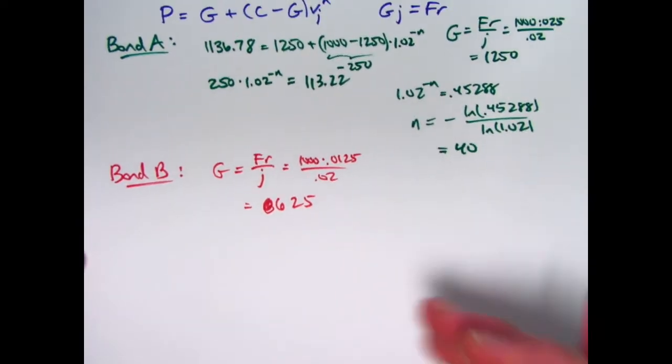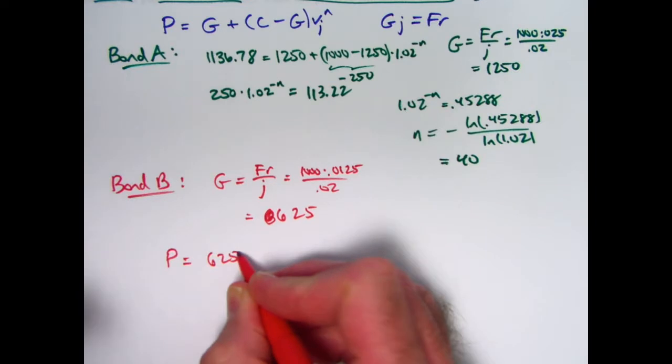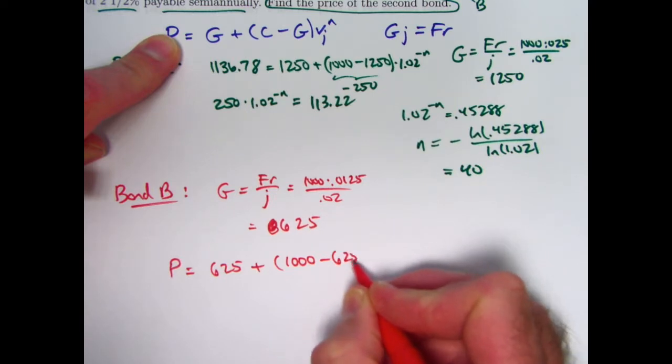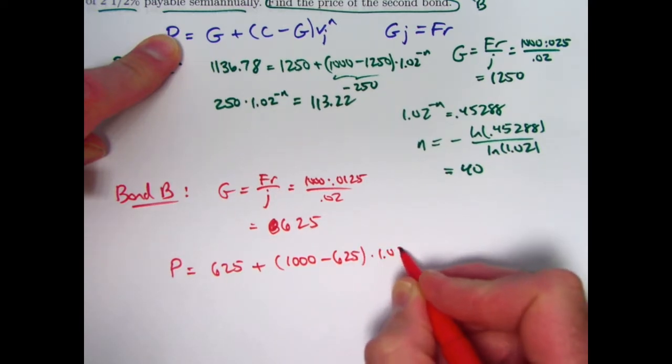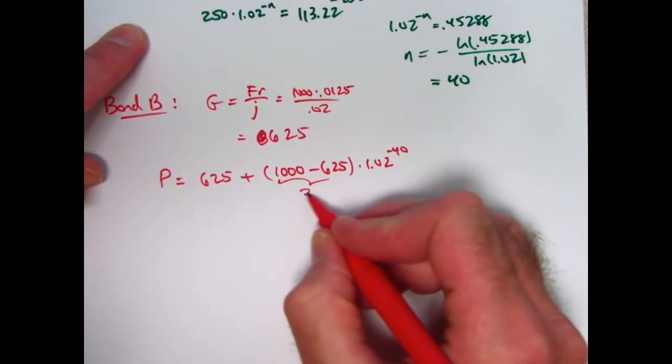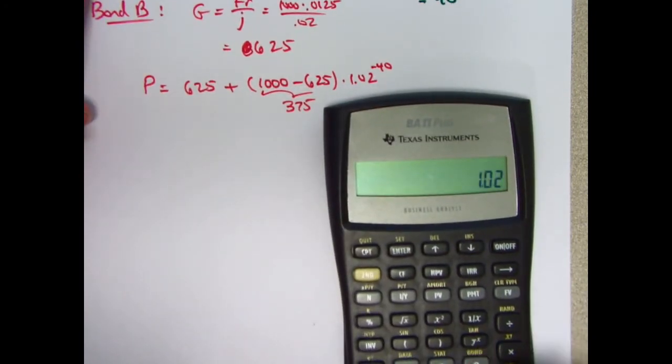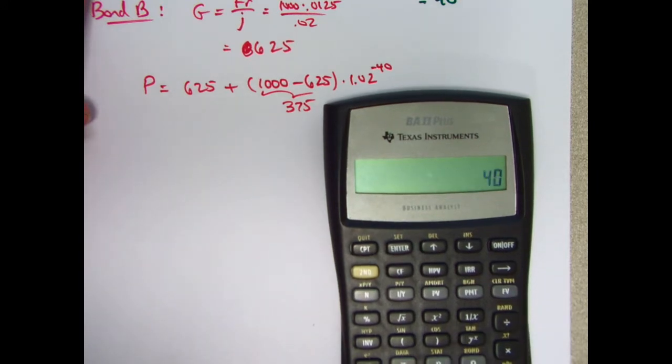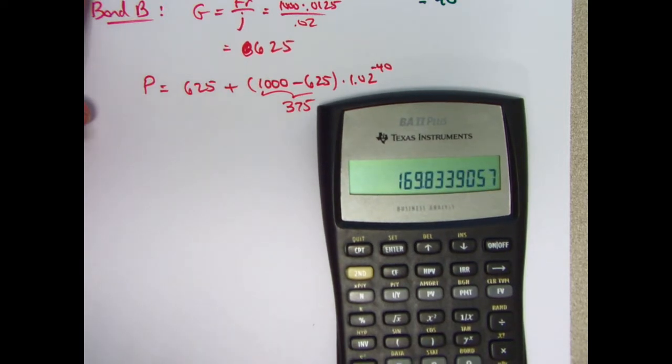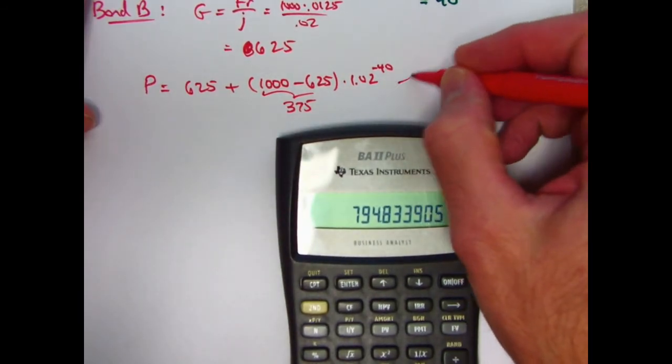All right. So now we've got n. We can go ahead and use that formula for the price. 625. I'm looking at this formula here, the base amount formula plus C is still 1,000 minus 625 times 1.02 to the negative 40th power. We know what n is. This is going to be 375 here. So let's see how this turns out. 1.02 reciprocal raised to the positive 40th power is the same as this, times 375 plus 625 gives $794.83, and that is correct.